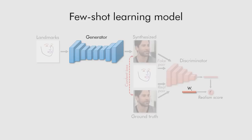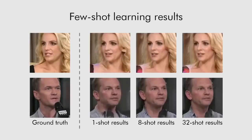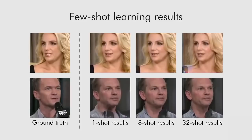After that, we train the generator and the discriminator on the available few images using the same adversarial objective as in the meta-learning stage. The adversarial fine-tuning is very important for the improvement of realism and identity matching. It also allows us to get a more personalized model given a larger image set for fine-tuning; the identity match improvement is particularly noticeable in the bottom example.